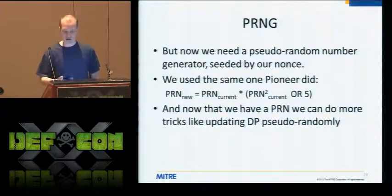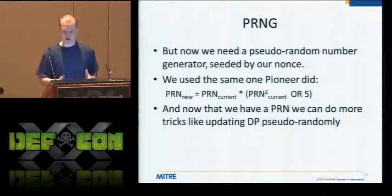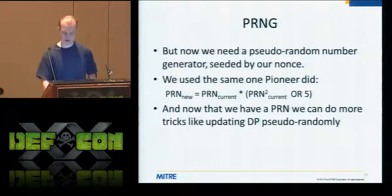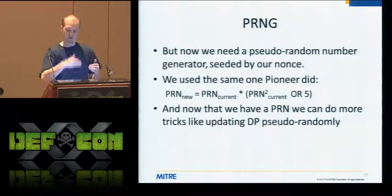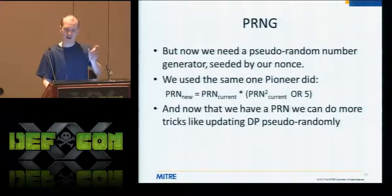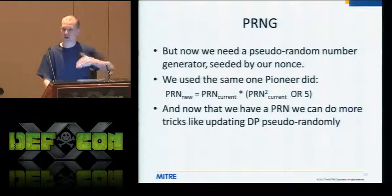To do this, we need to add a pseudorandom number generator — we use the same one as Pioneer. You seed it with your nonce, giving a fresh seed for every single measurement. In assembly this is nice and simple: take your current value times the current value squared, OR with five. This works as a PRNG that cycles through all possible values before looping back. We can also make the data pointer a function of this pseudorandom value, so instead of a strict linear sweep over memory, we bounce around to different locations each time. This prevents an attacker from predicting exactly when the self-check will read a compromised location.